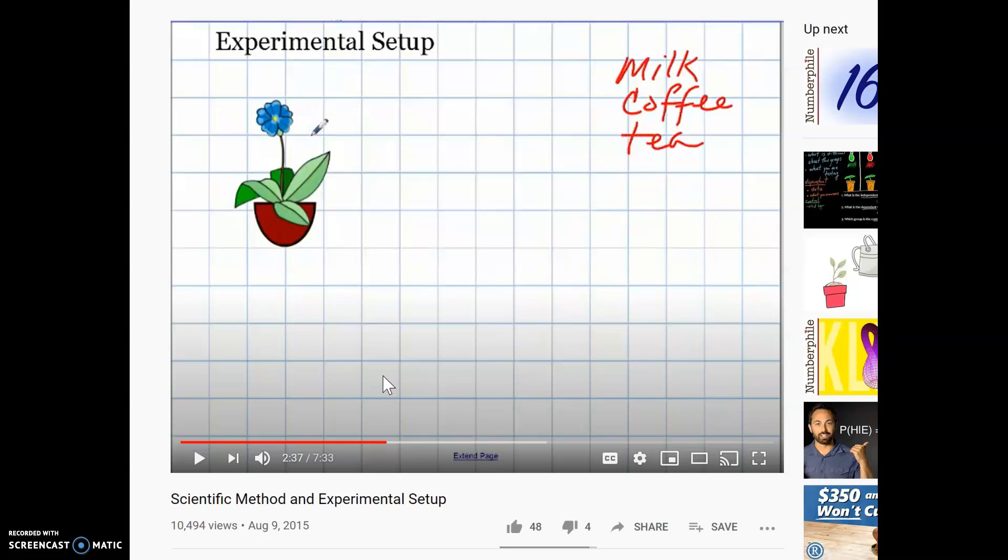When you first start writing out your problem or your question, you don't have to be specific about how does milk, coffee and tea. You could just say different liquids. When you get down into your materials or your hypothesis, you can be more specific with that. So let's go on. That's my objective. And so what I want to do is I want to have a... So again, he's calling it an objective. We call it a problem or a question. Keep in mind that some teachers may use the term objective.